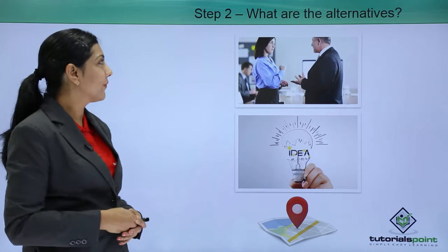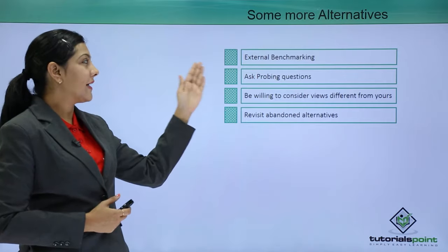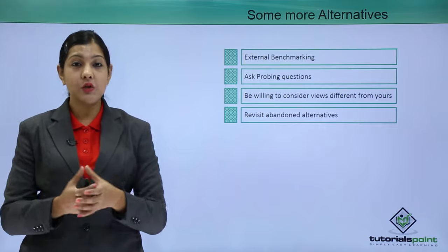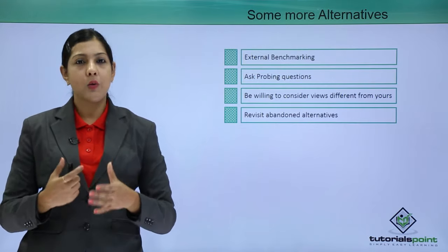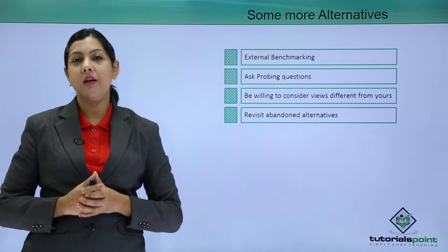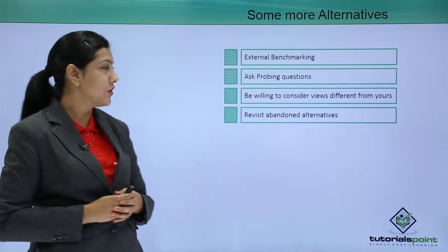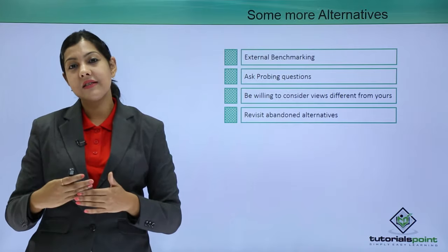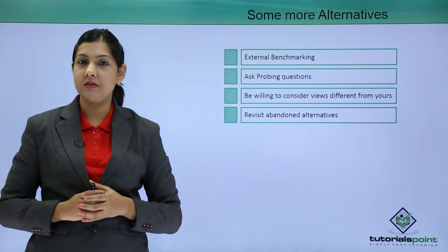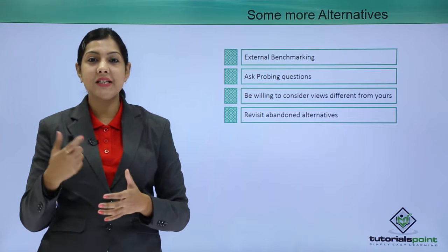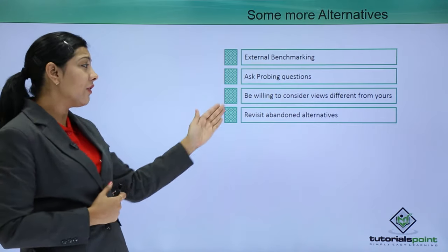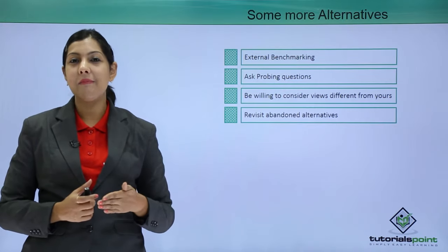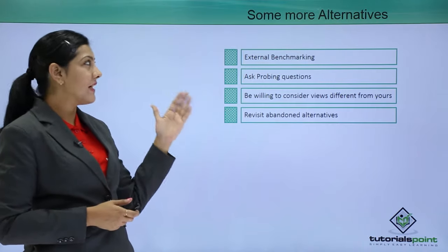Other ways to find alternatives include external benchmarking — define a benchmark for yourself. Ask probing questions, especially open-ended questions beginning with what, how, where, and why — these help narrow down solutions. Be willing to consider views different from yours; we are often very stuck in our own way of thinking, so be open to other people's points of view because they might come up with something you haven't considered. Also, revisit abandoned alternatives — rethink options you dismissed earlier and think beyond what you might have previously seen.